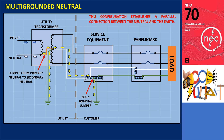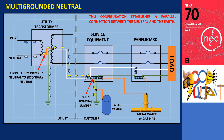It is important to note that according to section 250.4, the equipment grounding conductor must be connected to non-current carrying conductive material that is likely to get energized. In the presence of a well casing and metal pipe, it must also be connected to the earth, creating an additional pathway to the ground.